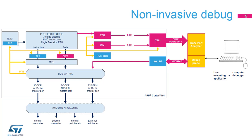Non-invasive debug aims to track what happens in the processor without affecting its performance. It is based on real-time trace. The ETM and ITM modules have the capability of synthesizing trace packets and issuing them over the AMBA trace bus, or ATB. The TPIU receives the trace packets and outputs them over an external interface so that the trace port analyzer, or TPA, can capture them.